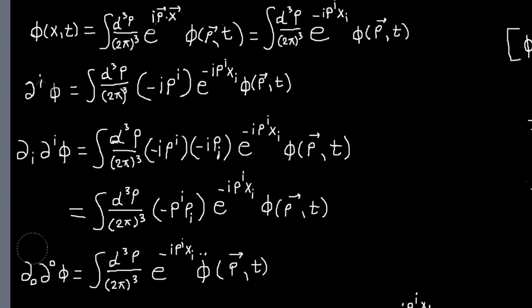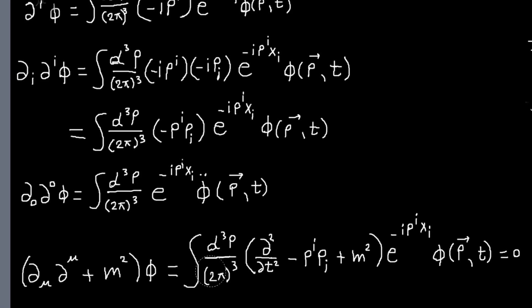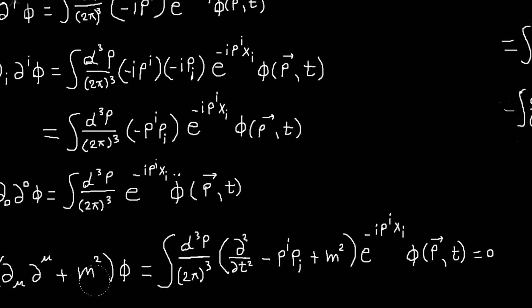Then I need to calculate d zero d zero phi. The only thing that depends on time is our phi of p and t, so this will just be, we write double dot over our phi here.